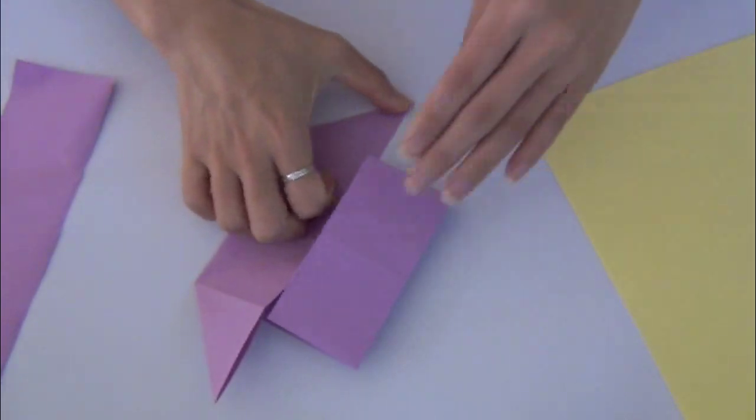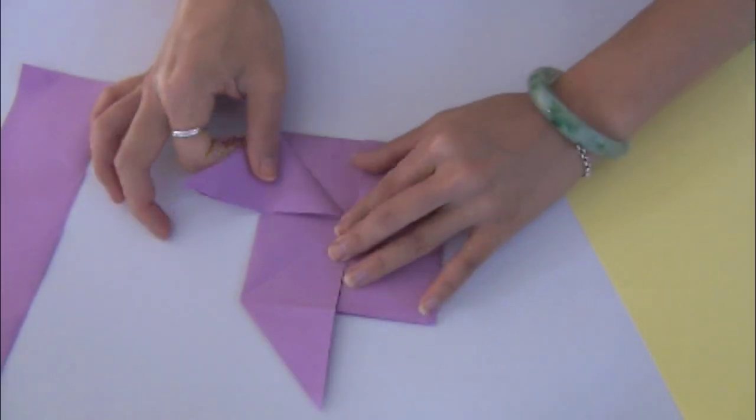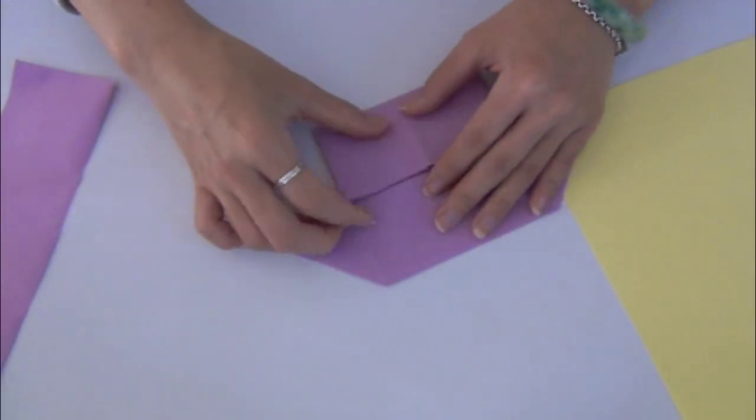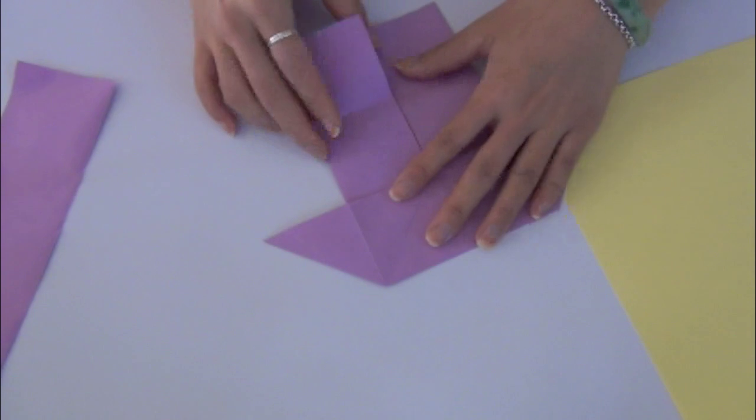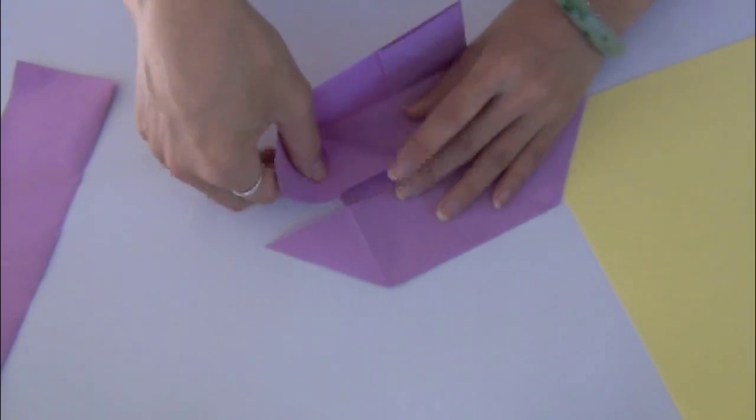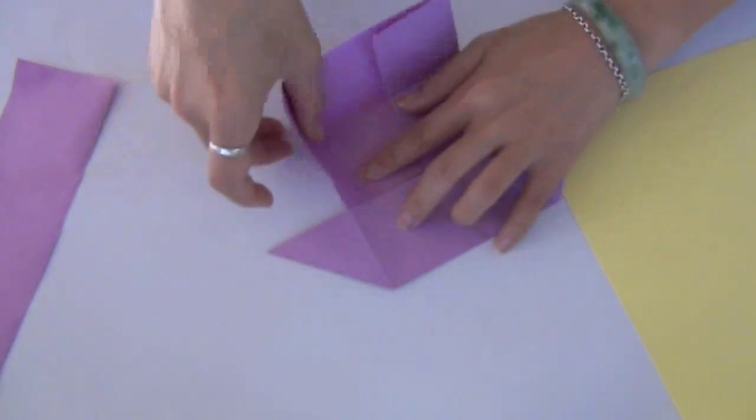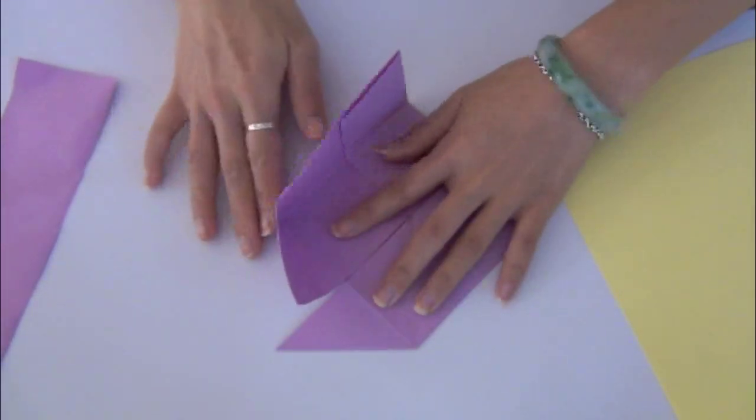Now you have the second flap ready. Now just repeat the same process on the opposite side. It's fairly simple. Notice how I pay special attention to the lineup of the paper before forming the crease.